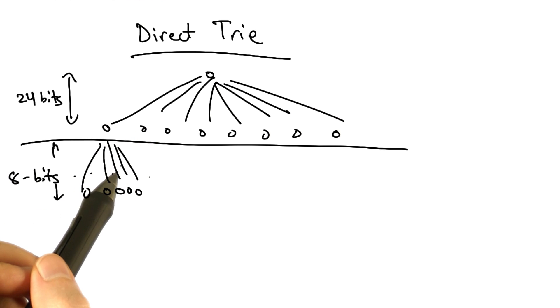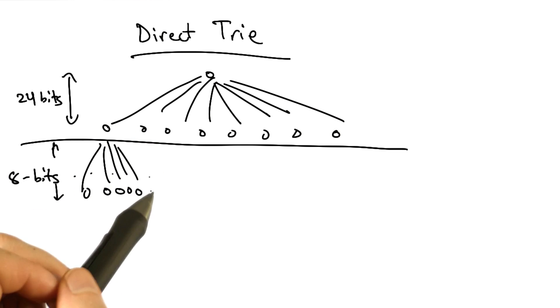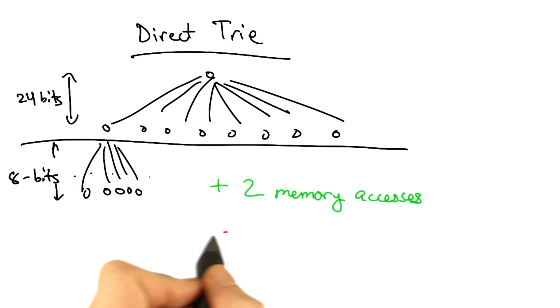Now here, we can look up an entry in the forwarding table with just two memory accesses. The problem is that this structure results in a very inefficient use of memory, unlike the single bit trie.